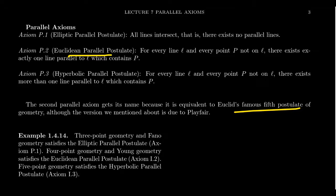Non-Euclidean geometries can have Euclid's first four postulates, but they don't have the fifth one. A long history of geometry leading into the modern era had people believing the fifth postulate to be a theorem of the other four postulates — but no one could ever prove it because, in fact, Euclid's fifth postulate was independent of the others.